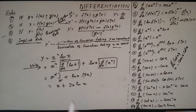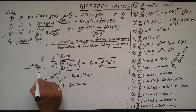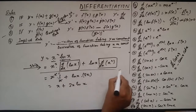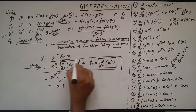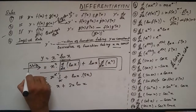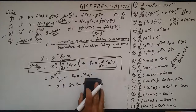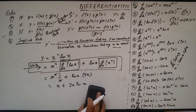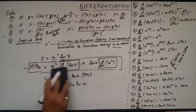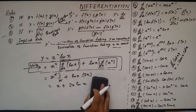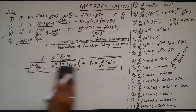It is not necessary to write the intermediate step at all if you understand the product rule, but if you want to write it to show that you have applied the product rule, that is fine.